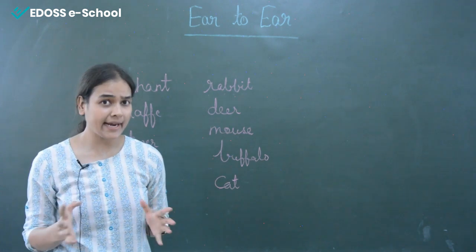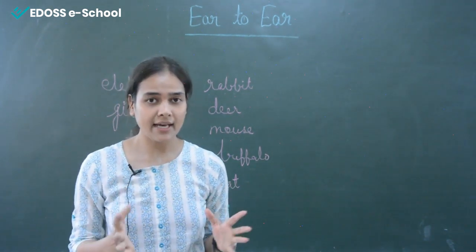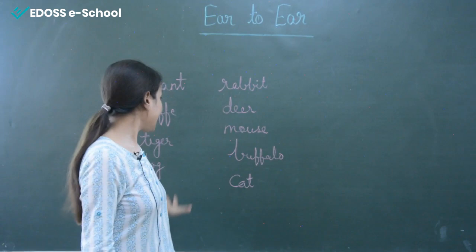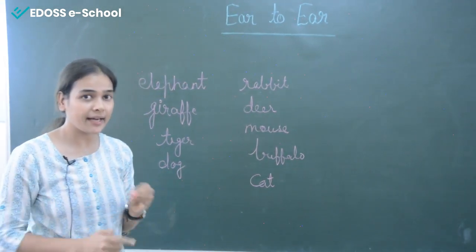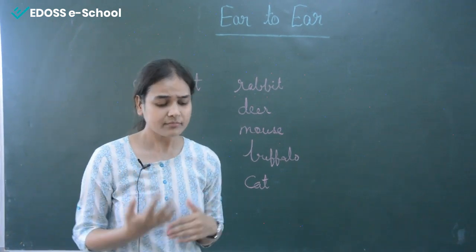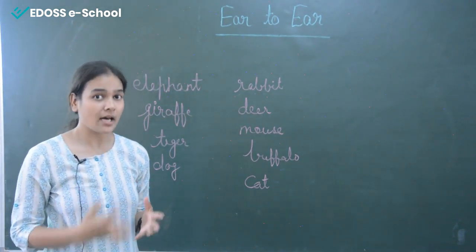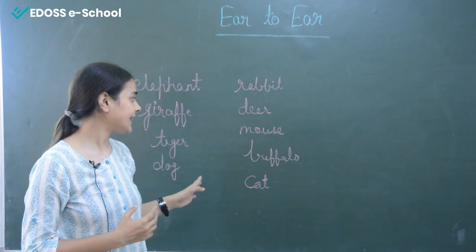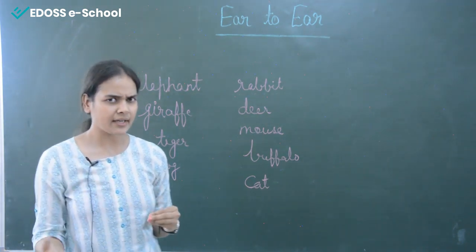Different patterns on these animals are due to the hair on their skin. So the ears of the animals that are visible from the outside are also due to the hair on their skin.